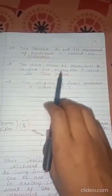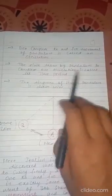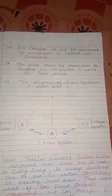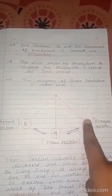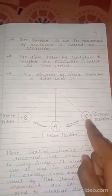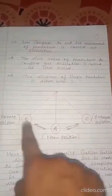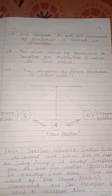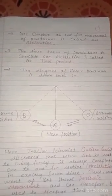The time taken by pendulum to complete one oscillation is called time period. एक oscillation पूरा करने के लिए जो time लगता है pendulum को, उसे time period बोलते हैं। To-and-fro motion को oscillation बोलते हैं, यह oscillatory motion है, और जो time इसमें लगता है उसको time period बोलते हैं।